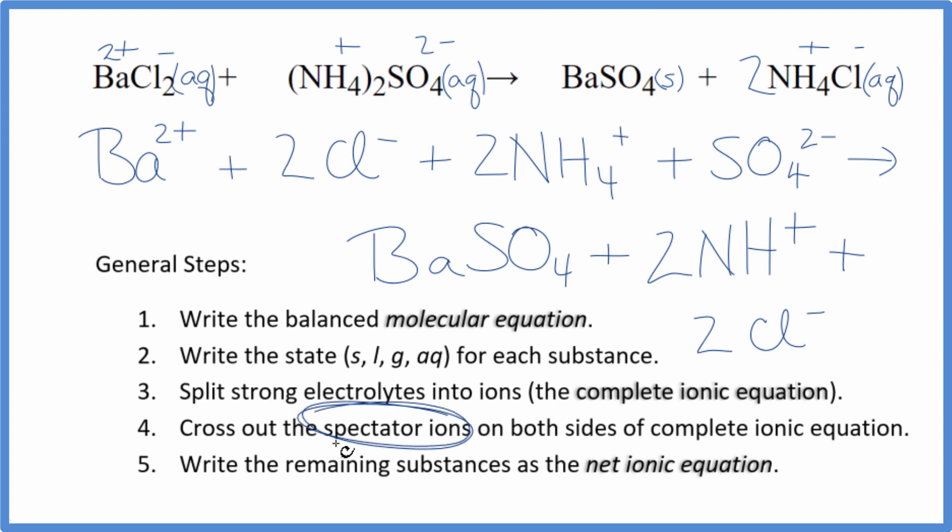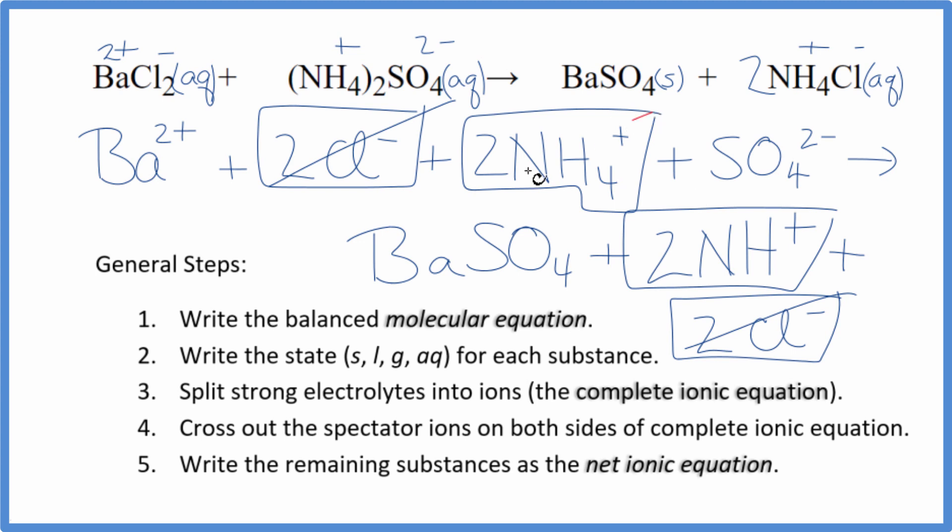Now we're going to cross out spectator ions. Spectator ions are on both sides, so we have our reactants and our products. I have two chloride ions here and in the products - those are spectator ions. I have two ammonium ions and in the products - spectator ions. Cross them out. What's left, that's the net ionic equation for BaCl2 plus (NH4)2SO4.